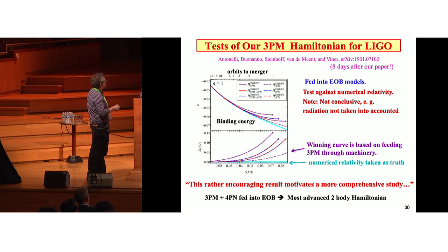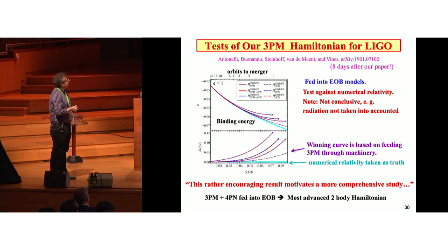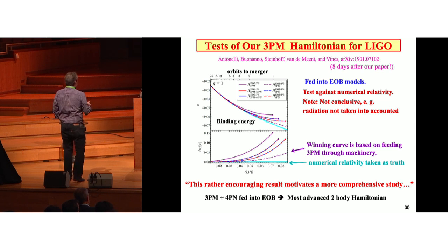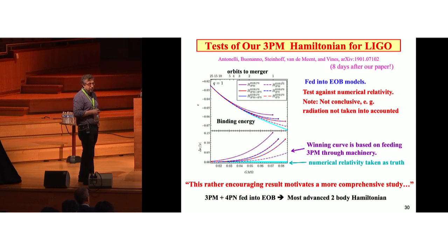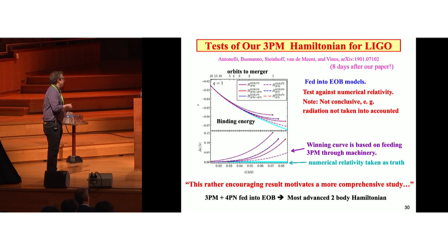There's like an implicit gauge, but not anything we chose. Okay, so what about our friends at LIGO, the LIGO theorist? So this is Alessandra Buonanno. I think it's very cool. Eight days after our paper, they had a paper analyzing the consequences of the new information from our 3PM Hamiltonian on what it might mean for the templates. And one of the tests they do is to see how the binding energy compares to the truth. The truth is determined by numerical relativity. The closer you are to the truth, the better. I'm almost done. And anyway, this is some complicated story of how you have to feed this through effective one-body models. And you see the winning curve is based on feeding it through the PM, feeding 3PM through this machinery. Okay, what exactly this means and how you interpret this for the templates, I don't know. But there was a sentence in their paper. This rather encouraging result motivates a more comprehensive study. So that's very good.